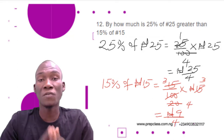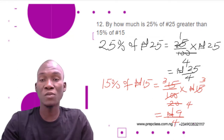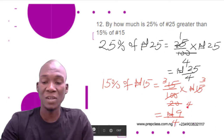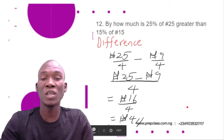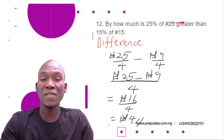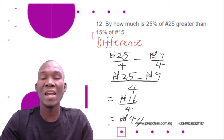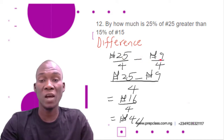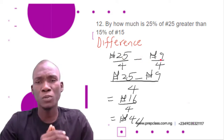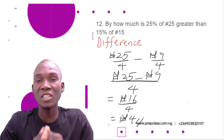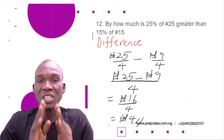Now we need to find by how much 25 percent of 25 naira is greater than 15 percent of 15 naira, so we need to find the difference. The difference is 25 percent of 25 naira, which is 25/4 naira, minus 15 percent of 15 naira, which is 9/4 naira. So we have fraction minus fraction.